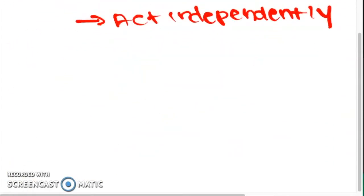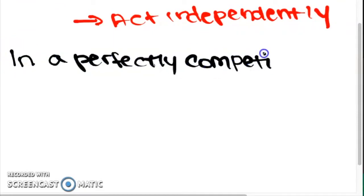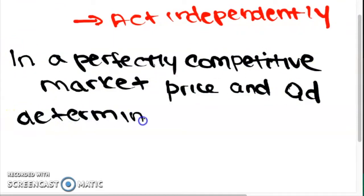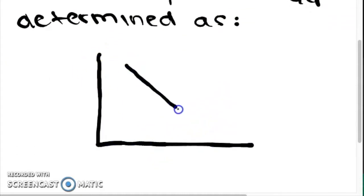In a perfectly competitive market, without government intervention, the only thing that determines quantity and price, or equilibrium, is demand and supply.